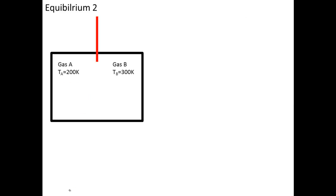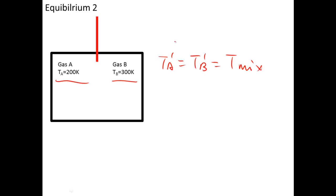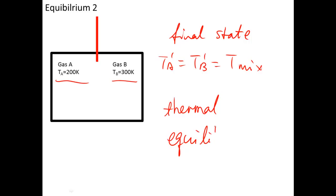We notice that the initial temperature of gas A is 200 Kelvin and of gas B is 300 Kelvin — they are different. Therefore, after the partition is removed, the temperature of gas A and gas B will change during mixing until T_A equals T_B equals the temperature of the mixture at the final state. After that, temperature will not change anymore, so the system reaches thermal equilibrium.